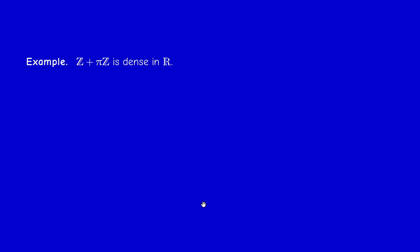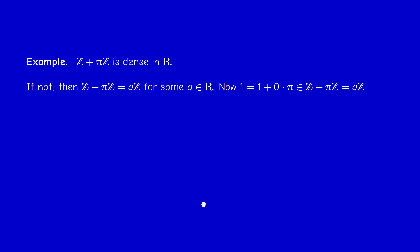Let us illustrate this to prove a density result. The group Z + πZ is dense in R. It suffices to prove that the first alternative in the theorem cannot hold, i.e., we argue by contradiction. Suppose Z + πZ is discrete, so it equals aZ for some a. Consider the number 1: it can be written as 1 + 0·π, so 1 belongs to Z + πZ, which by assumption equals aZ. So 1 = a·m for some integer m.